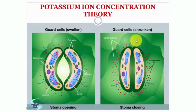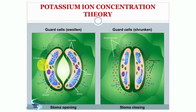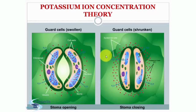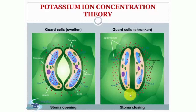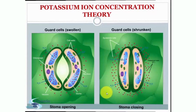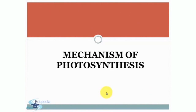Here you can see the summary of the potassium ion concentration theory. Where the guard cells are swollen, the stomata are open — the red droplets represent potassium ions, and there are more potassium ions on the inner surface. Where the guard cells are shrunken, the stomata is closed, with the concentration of potassium ions higher on the outer surface. So this was all about potassium ion concentration theory.